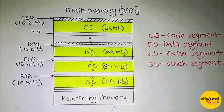The Code Segment is a 64-kilobyte segment used to store the code instructions of the program. The Data Segment is a 64-kilobyte segment used to store different operands and data of the program, such as two input values for addition, or a block of data called a source block.